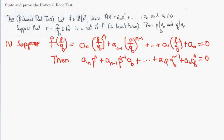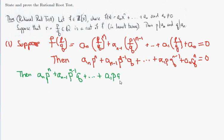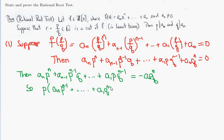Now here's where we prove that p divides a₀. Let's move the a₀·qⁿ term to the right-hand side, leaving everything else on the left. So we get aₙ·pⁿ plus aₙ₋₁·pⁿ⁻¹·q plus ... plus a₁·p·qⁿ⁻¹ equals negative a₀·qⁿ. Factoring out p on the left side: p·(aₙ·pⁿ⁻¹ plus ... plus a₁·qⁿ⁻¹) equals negative a₀·qⁿ.